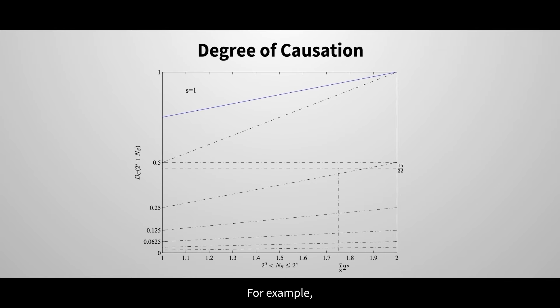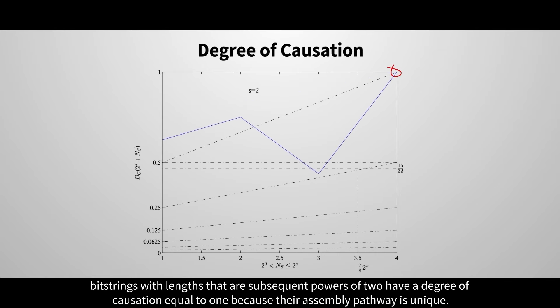For example, bitstrings with lengths that are subsequent powers of 2 have a degree of causation equal to 1 because their assembly pathway is unique.